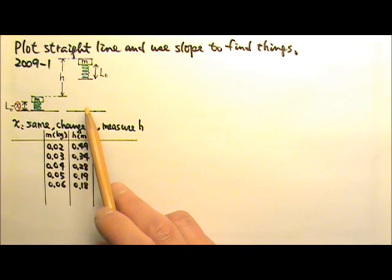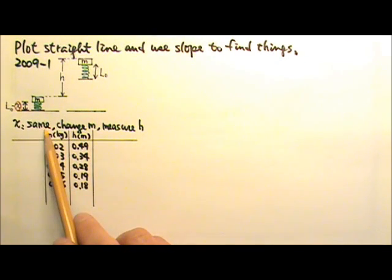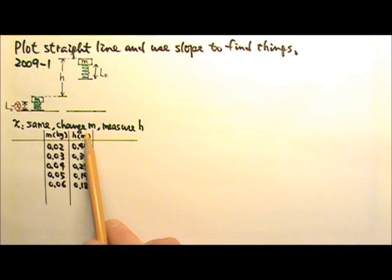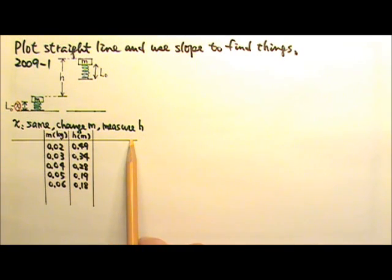The block is observed to rise by a height h. The student repeats the experiment with the same spring compression x, but a different mass m each time. The height h is measured for each mass, and here are the data.